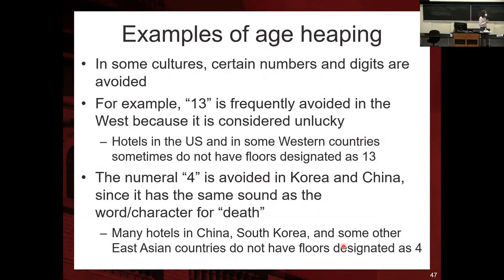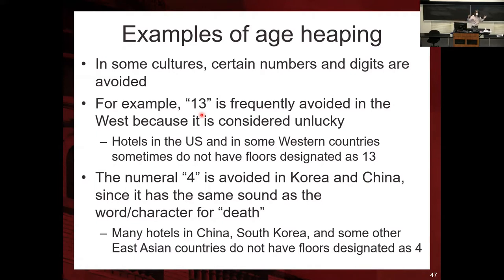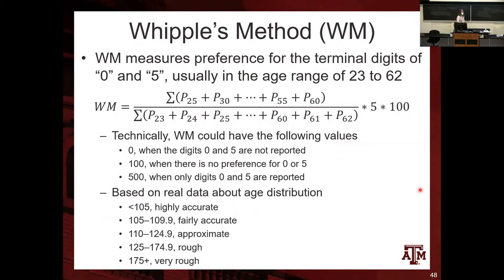Age heaping tends to be more pronounced among populations or subgroups with lower levels of education — that's an empirical finding. But this incorrect reporting of ages could also be related to cultural reasons. For example, the number 13 is usually avoided in the U.S. because it's considered unlucky — some buildings don't have a floor designated as 13. The number four in Korea and China has the same character as death and is also avoided. So it can be related to not knowing one's exact age, to lower education, or to cultural reasons.